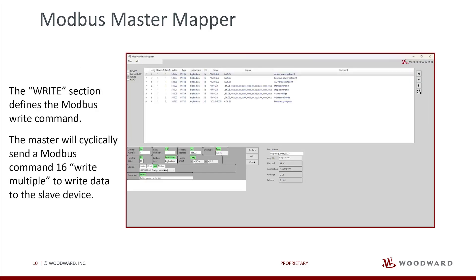The write section defines the Modbus write command. The master will cyclically send Modbus command 16 — write multiple — to write data to the slave device. The list is always automatically sorted by: 1) device, 2) rate, and 3) Modbus address.